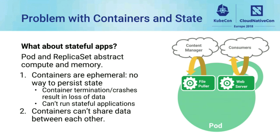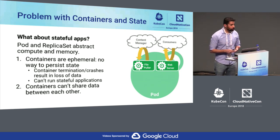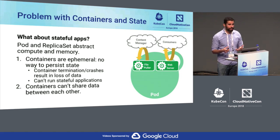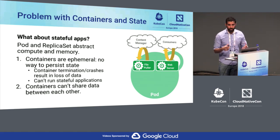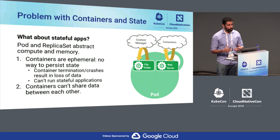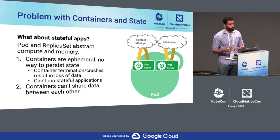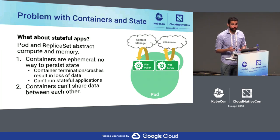The challenge is with stateful services. Pods and replica sets abstract away compute and memory, but they don't really address stateful services. The problem with state is that containers are inherently ephemeral — there is no way to persist state inside a container. Once a container is terminated, everything written inside it is gone. Containers also can't share data across container boundaries. So if you have multiple containers working together inside a Kubernetes pod, for example a container pulling static content and a web server serving it, without shared state you have no way to share data between them.